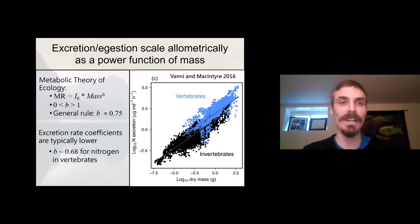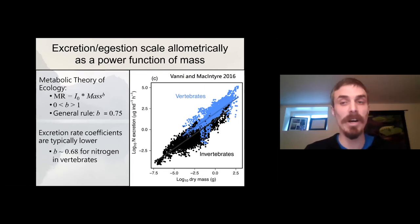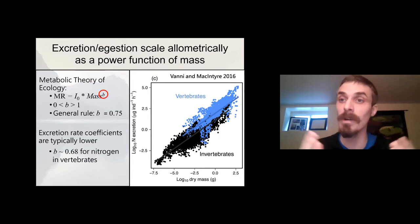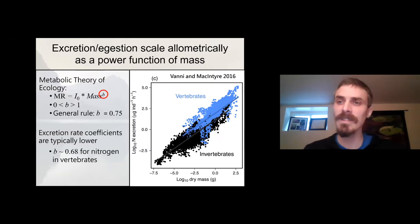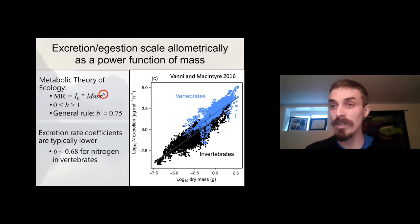A lot of research has demonstrated that ingestion and excretion — basically the production of feces and urine, which are major contributors to eDNA production — scale allometrically as a power function of the mass of an organism. This is a central tenet of the metabolic theory of ecology, which posits that physiological rates like metabolism and excretion can be expressed as the function of the mass of an individual raised to the power of a scaling coefficient B. The value of B is usually between zero and one, and the metabolic theory of ecology predicts B will be around 0.75. A meta-analysis published in 2016 found that the value of B was around 0.68 for nitrogen excretion in invertebrates, but fundamentally, excretion can be modeled using this framework.